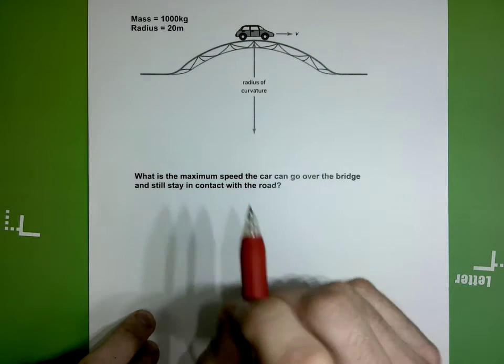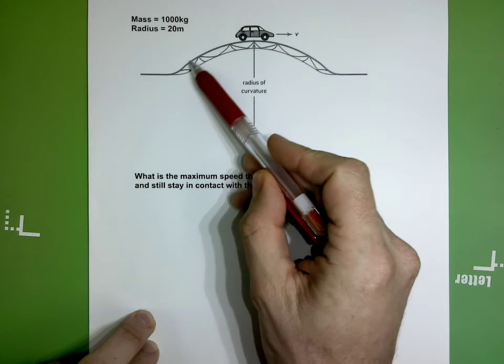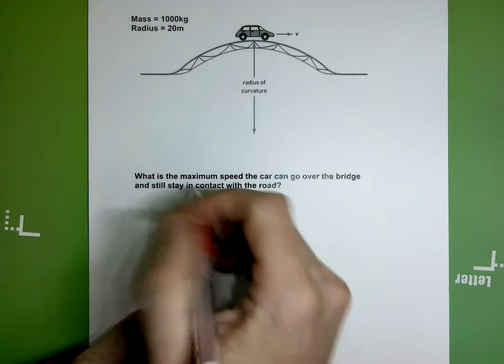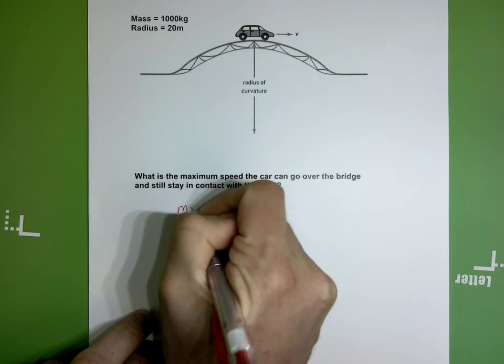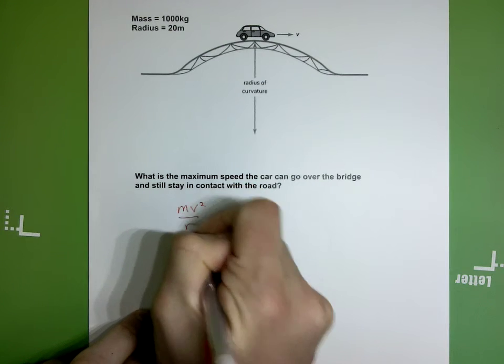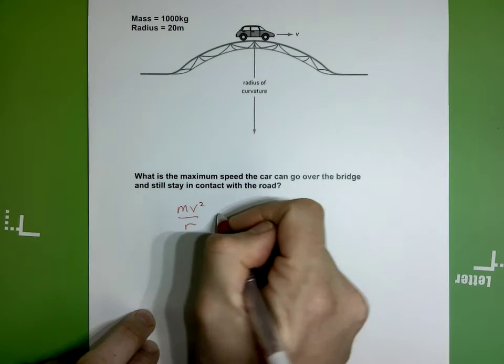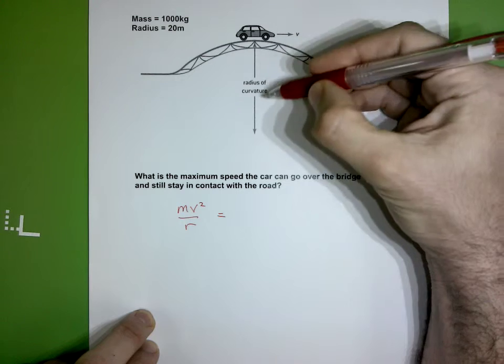We're assuming that the car is in constant circular motion as it goes over the bridge. Because of that, there must be a centripetal force directed towards the center of the curvature. That's the resultant force that acts towards the center of that circle.